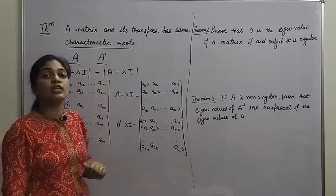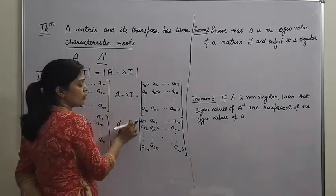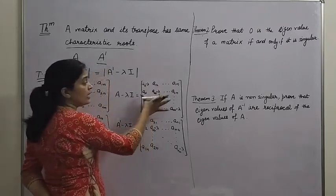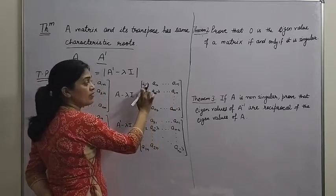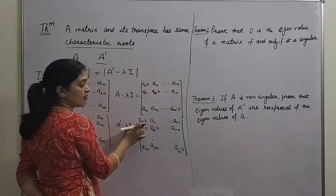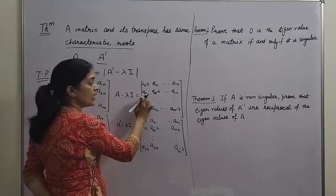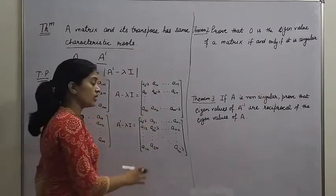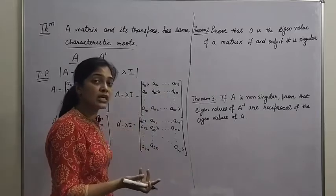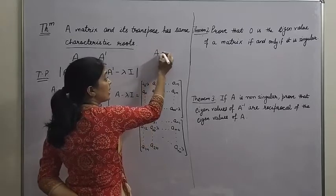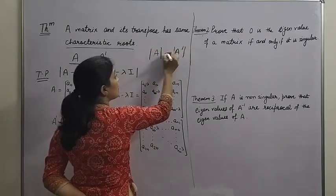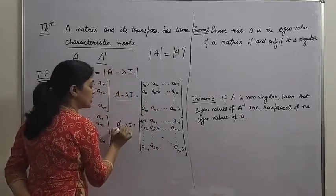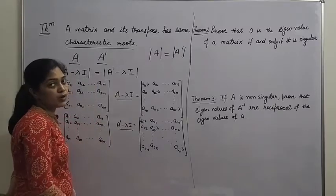Now comparing these two matrices — A minus λI and A transpose minus λI — we can see that these two matrices are just transposes of each other. The first row of one is the first column of the other. For instance, the first row is A₁₁ minus λ, A₁₂, A₁ₙ, and the first column of the other is also A₁₁ minus λ, A₁₂ up to A₁ₙ. Similarly for the second row with A₂₁, A₂₂ minus λ, A₂ₙ. Since the rows of one are the columns of the other, these two matrices are transposes of each other. And we know that a matrix and its transpose always have equal determinants. So their determinants are equal.